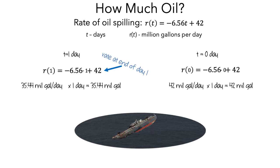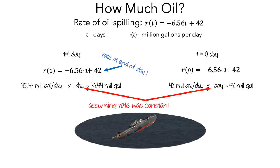Now we have two reasonable approximations of the total amount of oil that spilled. For each approximation, we made an important assumption. When we multiplied the rate by 1 day, we were assuming that the rate of oil spilling was constant for the entire day. There isn't anything wrong with doing this, but it's a pretty big assumption. I'd like you to think about whether there is a way to get a better estimate of the total amount of oil that is spilled.